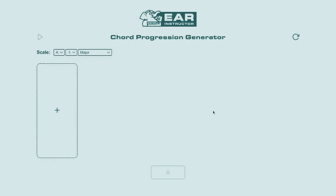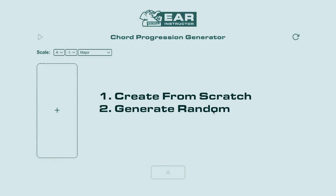Now there are currently two ways to create a Chord Progression with this generator. One is by manually selecting all of the chords and the options for the chords — I'll show you this approach later on in the video. The other way, which I'll show you now, is by randomly generating a Chord Progression.